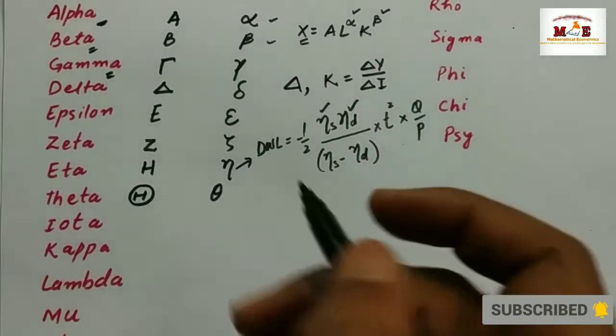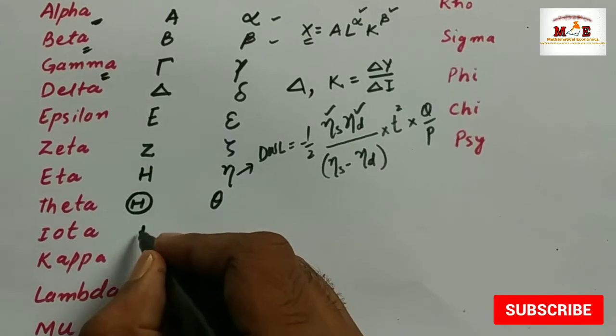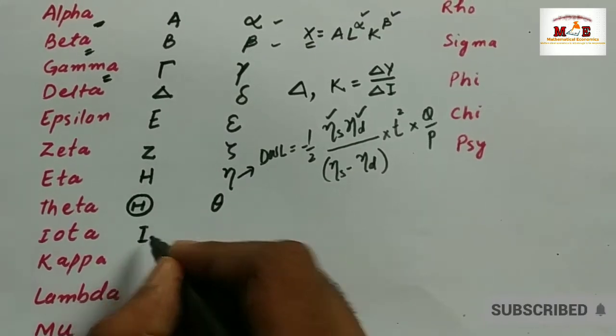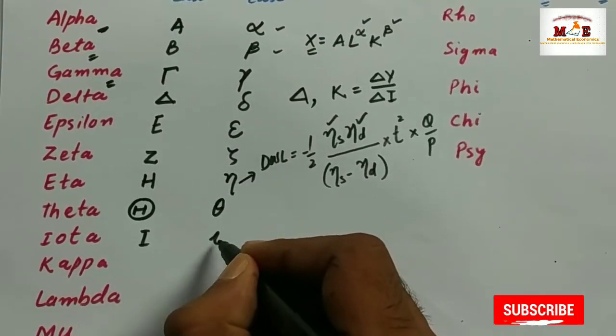And then there is iota. Its uppercase is like this and its lowercase is like this.